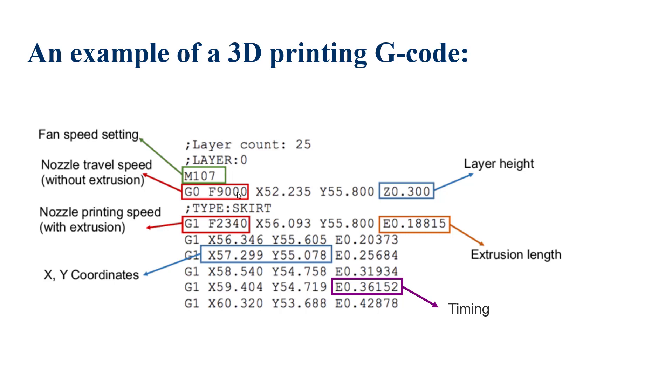You can see other parameters as well. You can see X and Y with numbers after them. For example, here X52.235 and Y55.8 shows that at a time when there isn't any extrusion, the location of the nozzle is that.